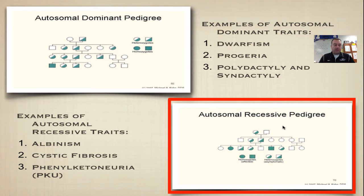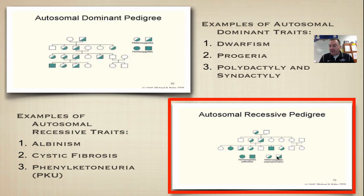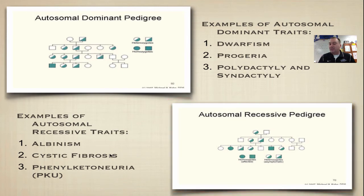Autosomal recessive traits are not going to show up as much because you need two copies, but because it's autosomal it's going to be the same in both males and females. Fully colored in means they show the trait; half colored in means they're carriers. As you can see, only two individuals actually have the trait. Examples of autosomal recessive traits are albinism, cystic fibrosis, and phenylketonuria.